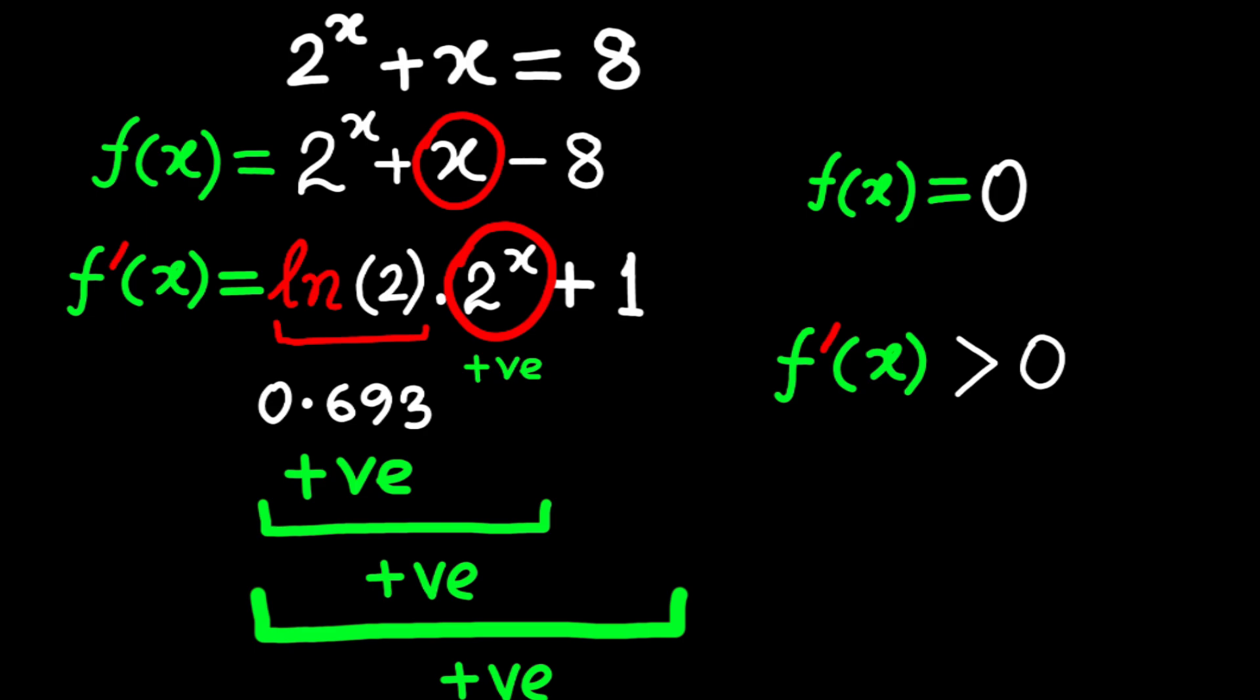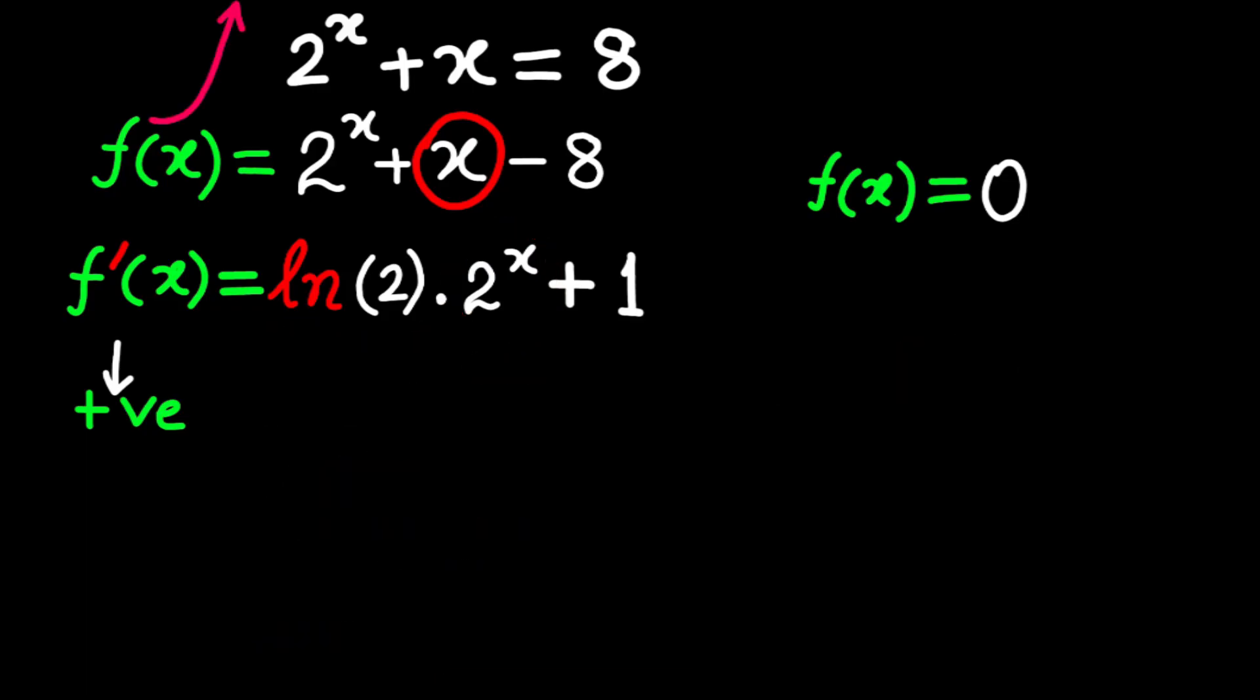What does that tell us? If the derivative is always positive, then f of x is strictly increasing. Picture it. As x moves to the right, f of x just keeps going up, never flattening out or dipping down. A function that's always increasing can only cross the x-axis, where f of x equals 0, at most once. Why? Because once it crosses, it's not coming back down.